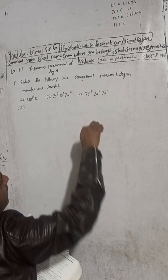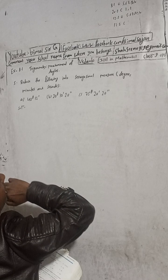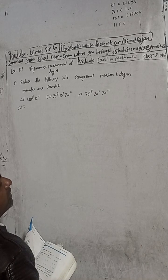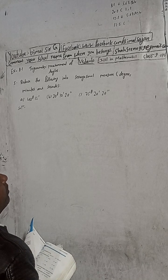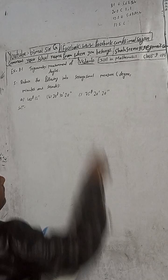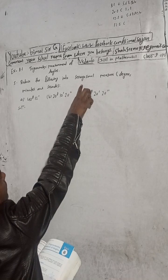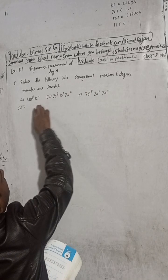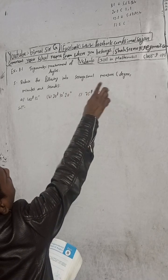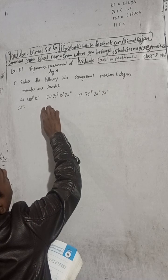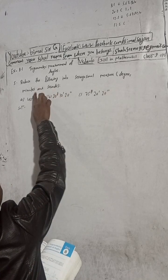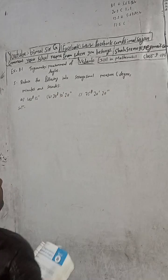This is the formula which is called SD. SD stands for sexagesimal decimal degree. This is a special review — I know the degree measure. The video can show the degrees, minutes, and seconds.